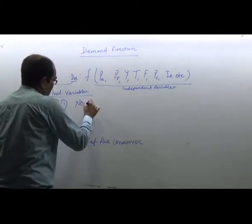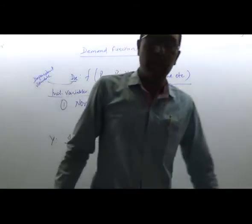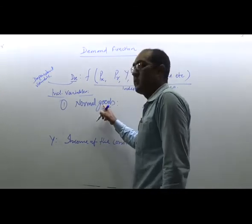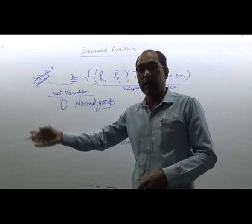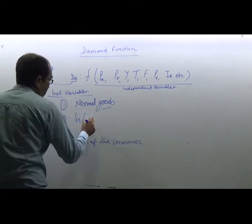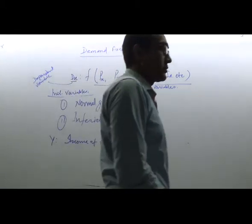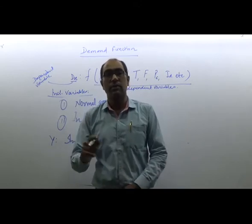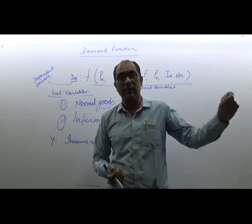Normal goods are those which are demanded more with rising income. There is a direct relationship between income and demand for normal goods — higher the income, higher the demand; lower the income, lower the demand. For inferior goods, there is an inverse relationship — higher the income, lower the demand for inferior goods; lower the income, higher the demand for inferior goods.